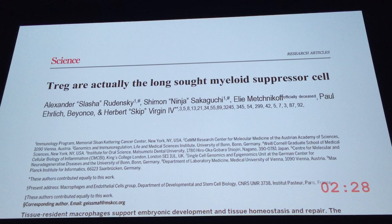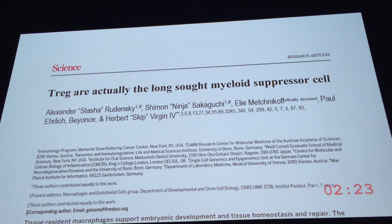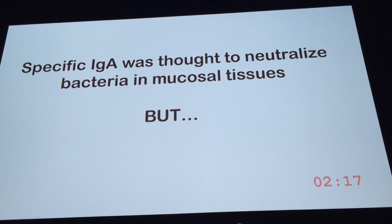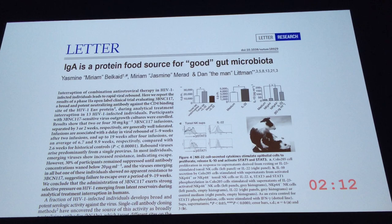You thought Tregs need a TCR for their function, but Sasha and Simone finally collaborated and showed that Tregs are actually the long-sought myeloid suppressor cell — part of the innate immune system. And Yasmin Belkaid and colleagues have shown that what we thought about IgA was completely false: they don't neutralize bacteria, they're simply food for the good microbiota.